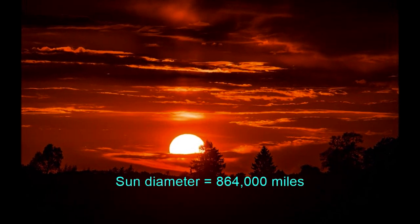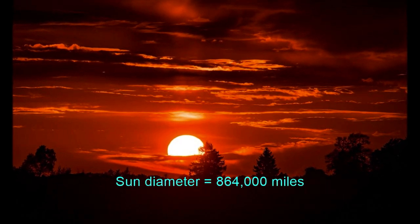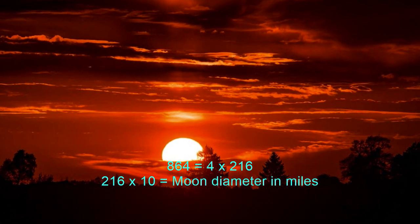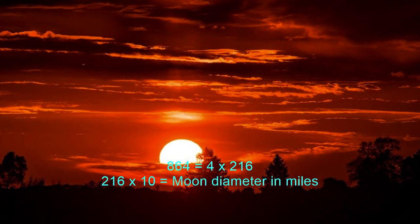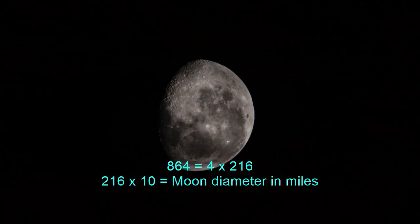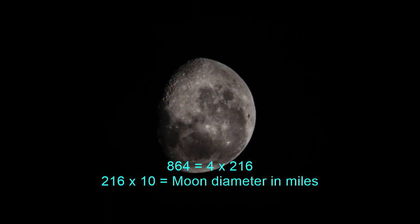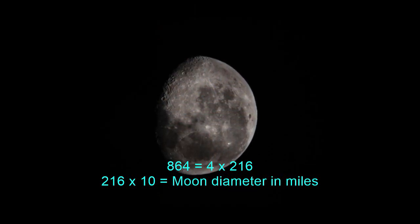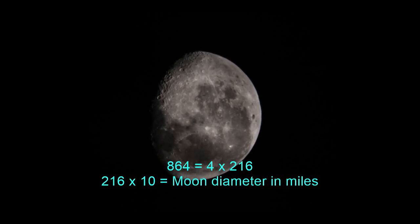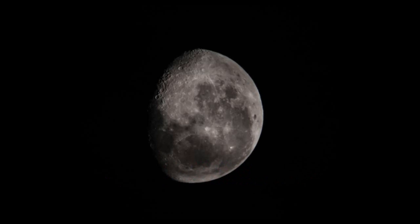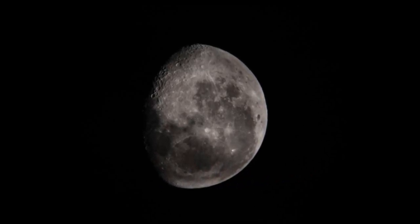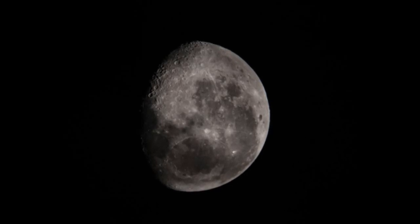That number is one-tenth the diameter of the Sun in miles. 864 is 4 times 216, which is one-tenth the diameter of the Moon. It is a fact that the diameter of the Moon is 2,160 miles. Keep in mind that the surface of the Moon contains mountains which stop it from being completely smooth. So given an error margin of five miles or so, we can say that the 2,160 mile diameter is exact.